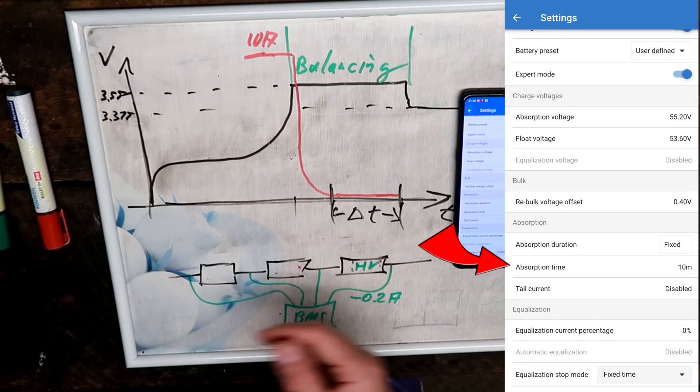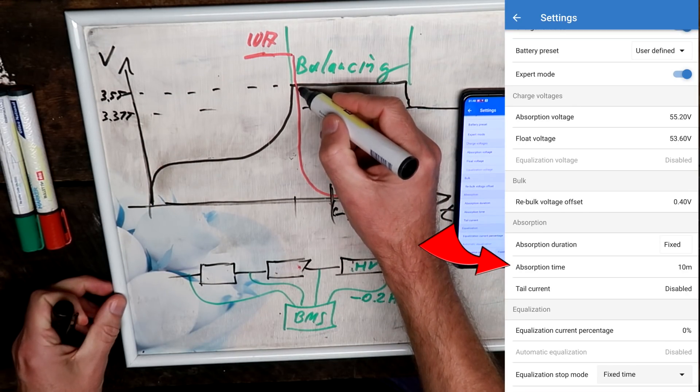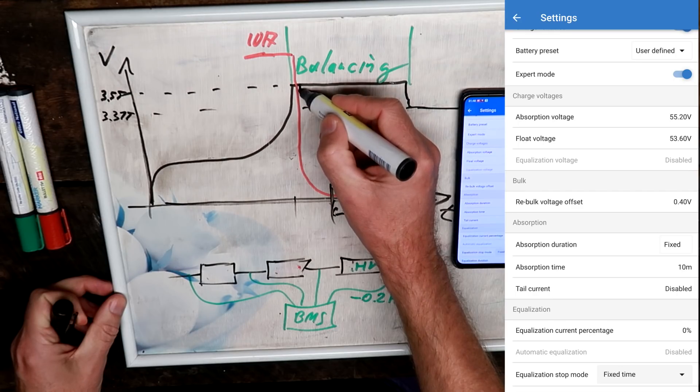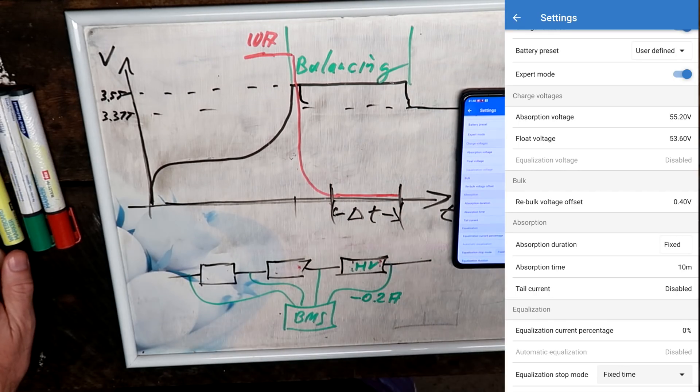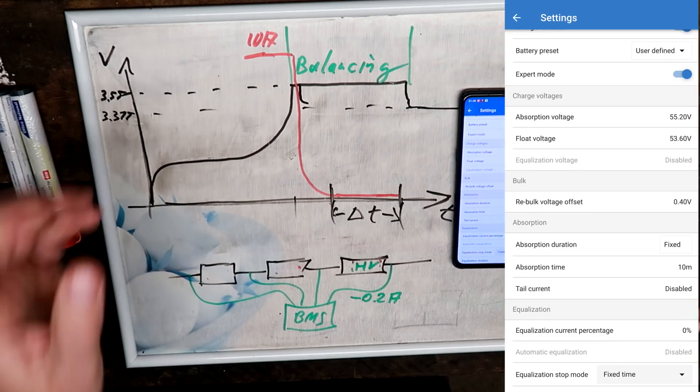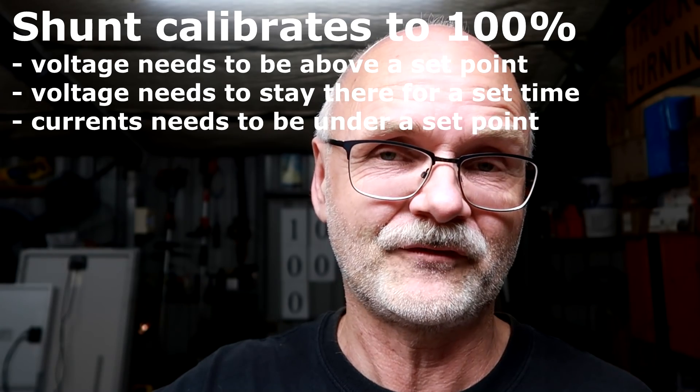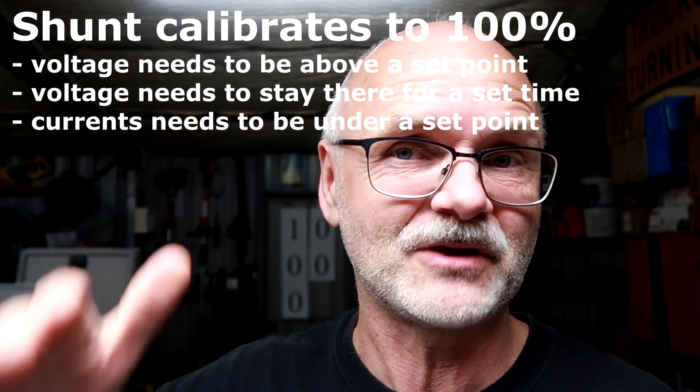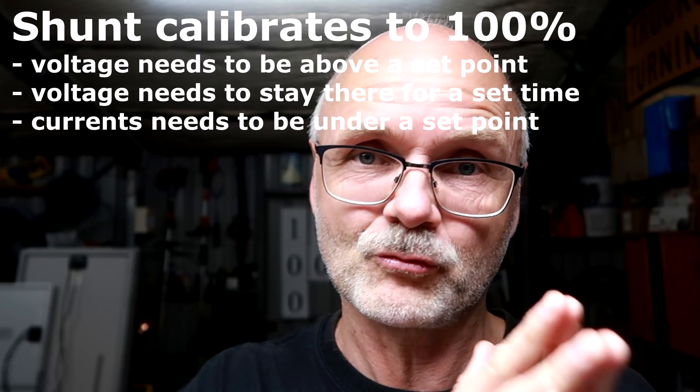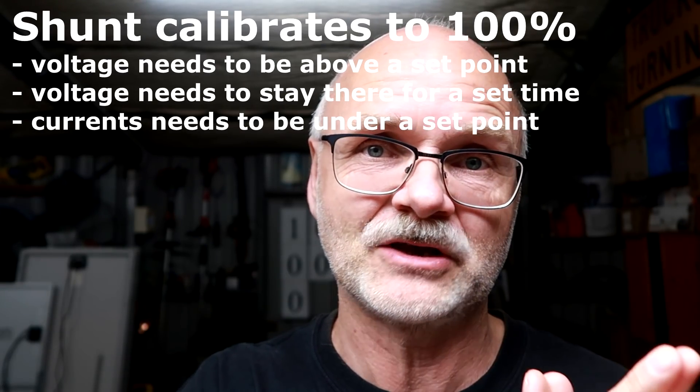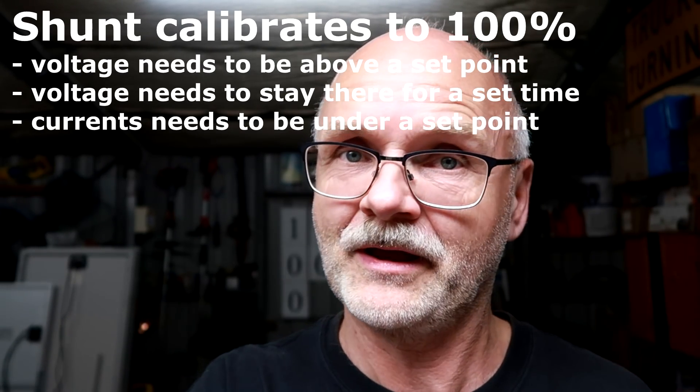And down here you can see the absorption time I have set is only 10 minutes. I basically give the battery no time to absorb. The 10 minutes is only to trigger my smart shunt. The smart shunt has certain trigger mechanisms to recalibrate itself to 100%, so that the smart shunt knows the battery is now full. We have reached this voltage, we have stayed there for a certain amount of time, and the current has dropped under a certain threshold. These are the three criteria for the smart shunt to recalibrate to 100%.